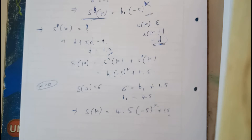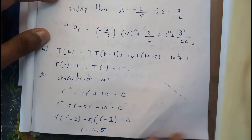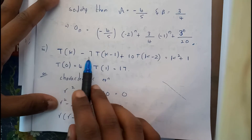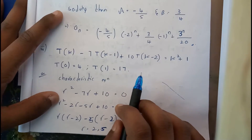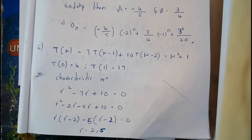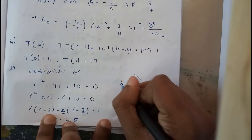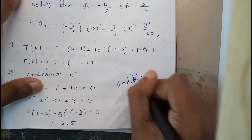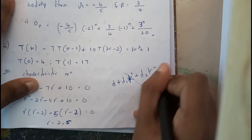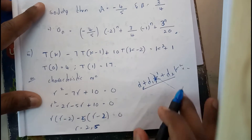Let's go through one more problem from the book. The second question is: t(k) - 7·t(k-1) + 10·t(k-2) = k² + 1. Here we are having k² on the right-hand side, so the particular solution assumption will include terms up to d0 + d1·k + d2·k².